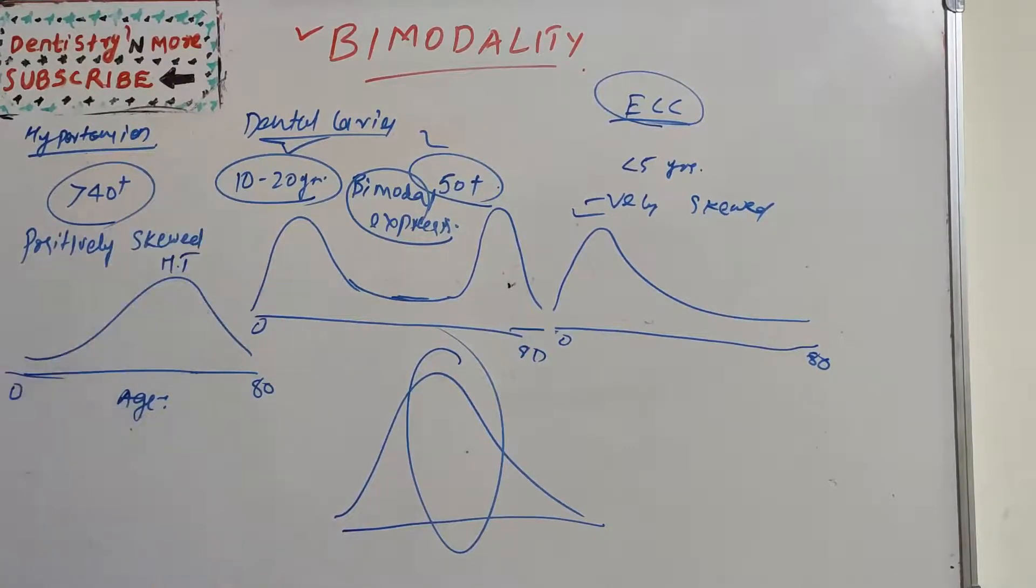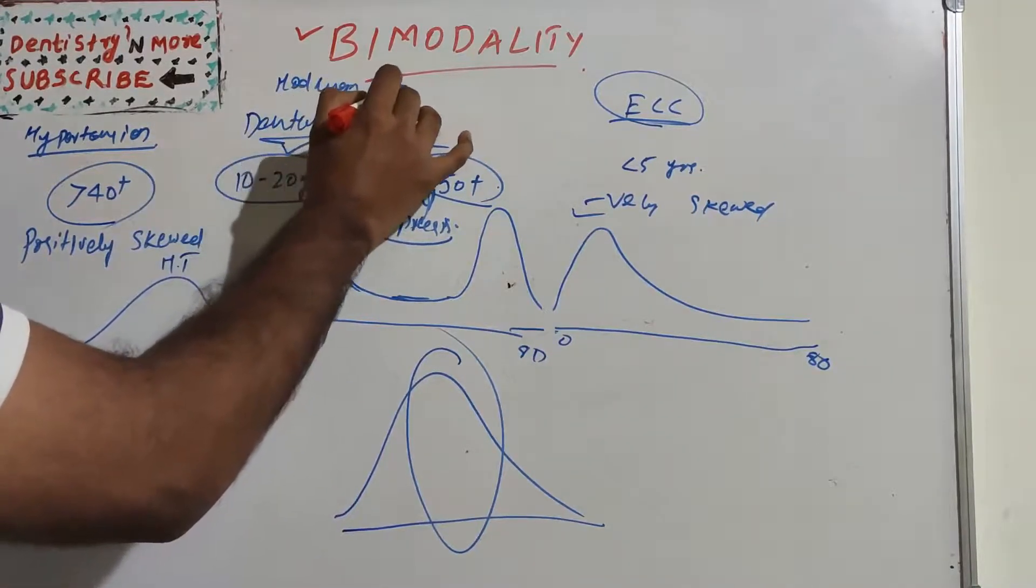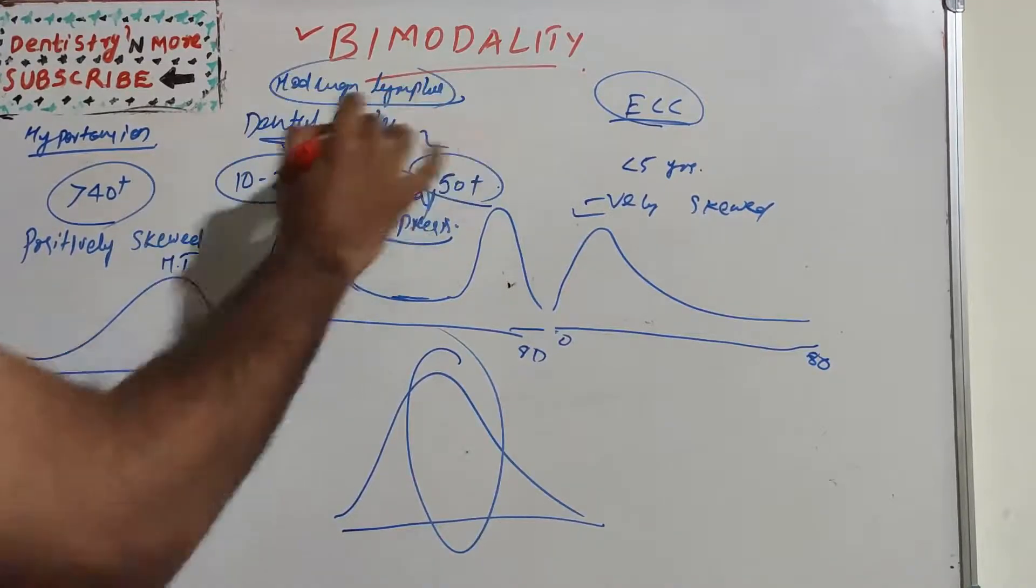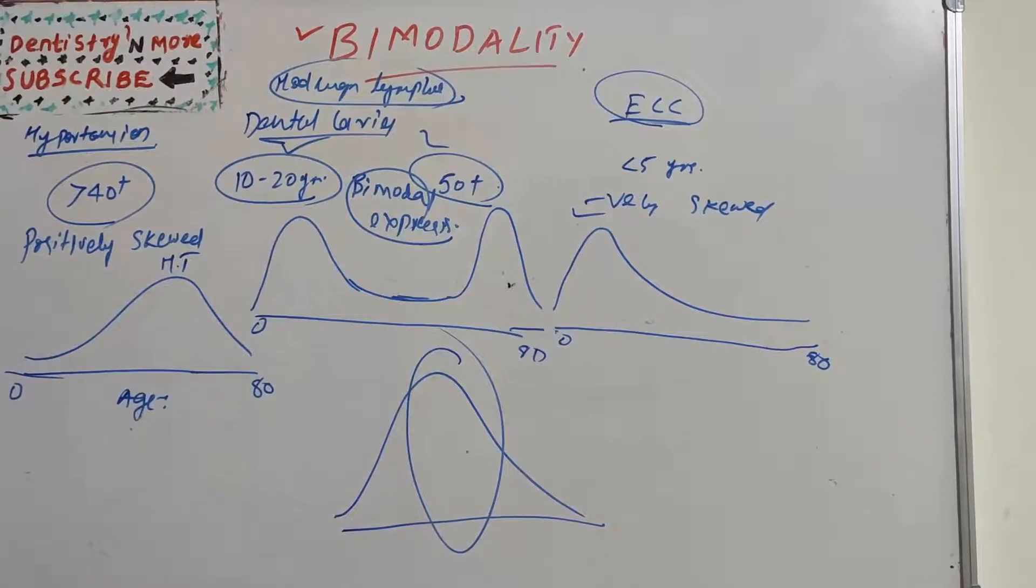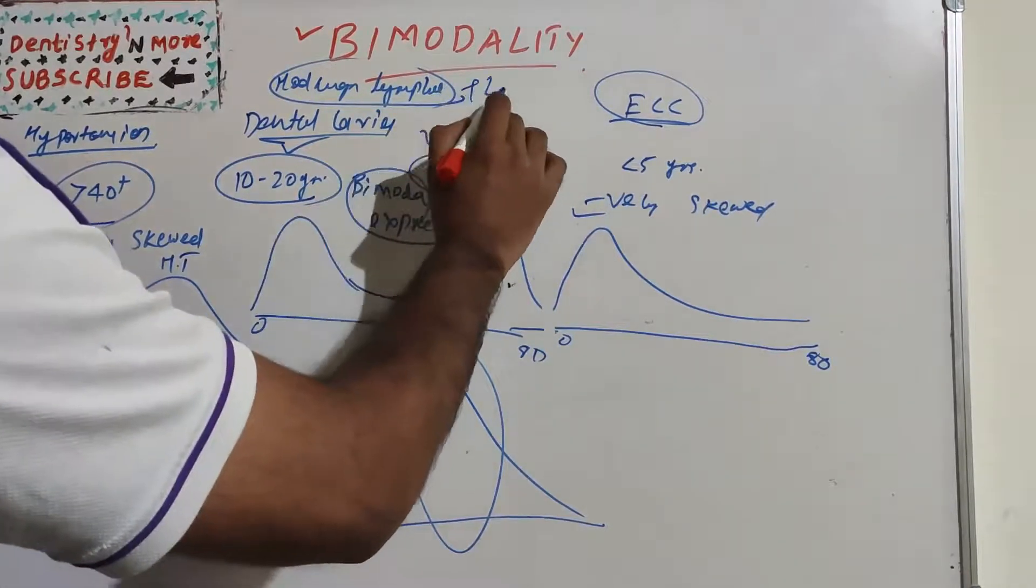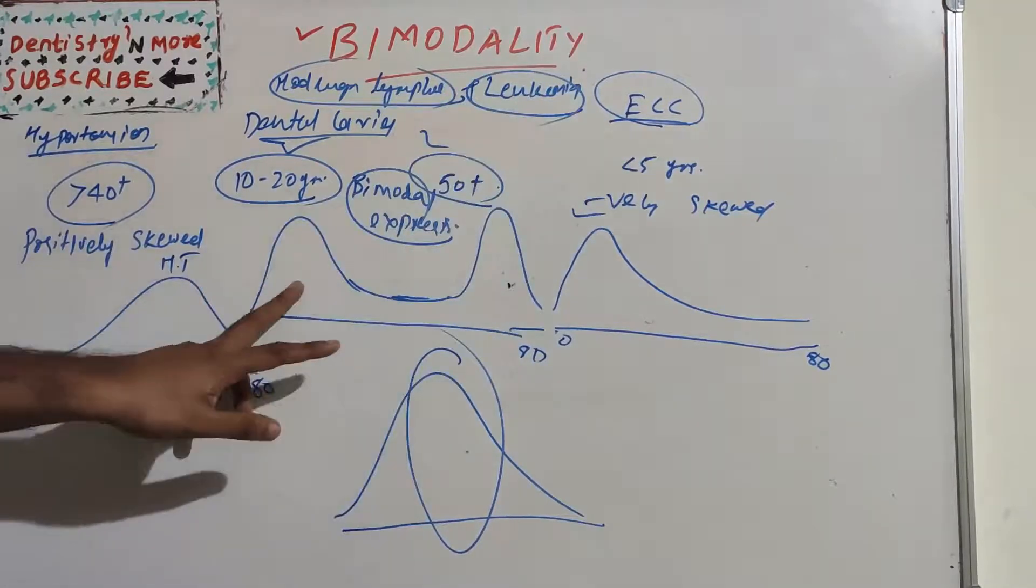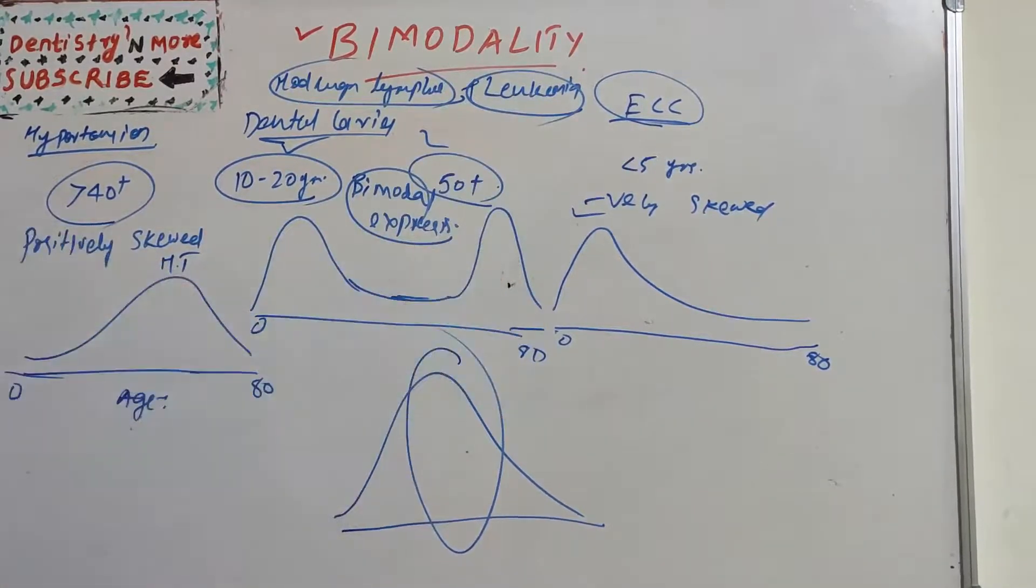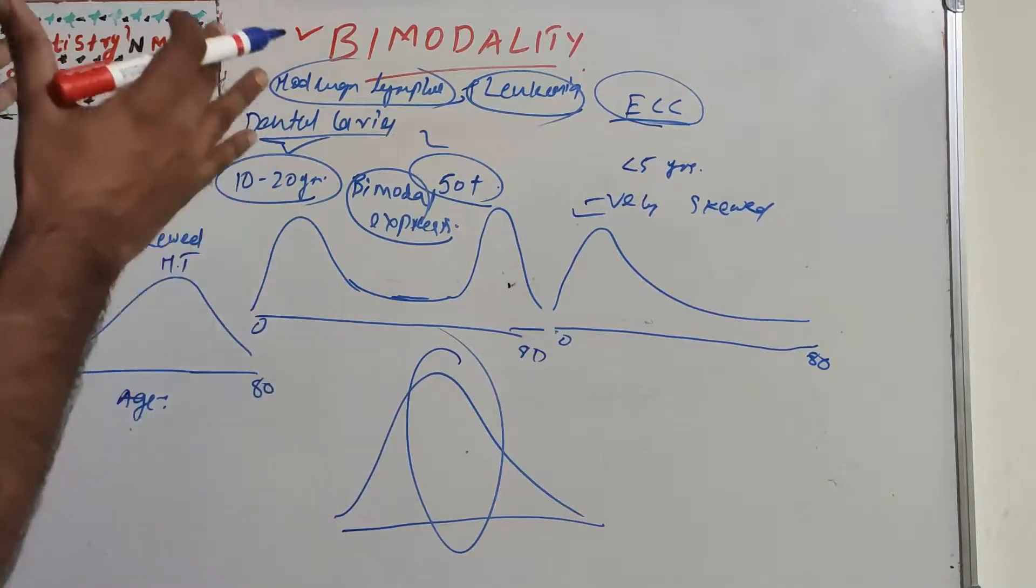And we also have many diseases in this format. Hodgkin's lymphoma is seen in this format—it has two peaks. And also we know leukemia also attacks two age groups: very young age group and very old age group.